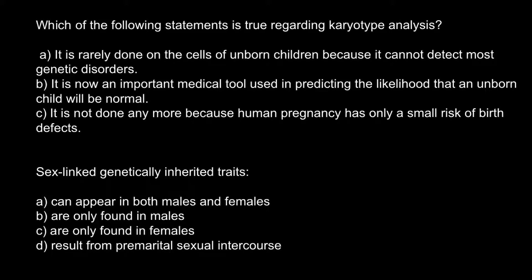Here is the first question: Which of the following statements is true regarding karyotype analysis? Answer A: it is rarely done on the cells of unborn children because it cannot detect most genetic disorders. Answer B: it is now an important medical tool used in predicting the likelihood that an unborn child will be normal. Answer C: it is not done anymore because human pregnancy has only a small risk of birth defects. We can cross out answer C right away because it is still a usable technique and is used very often, leaving us with answers A and B.